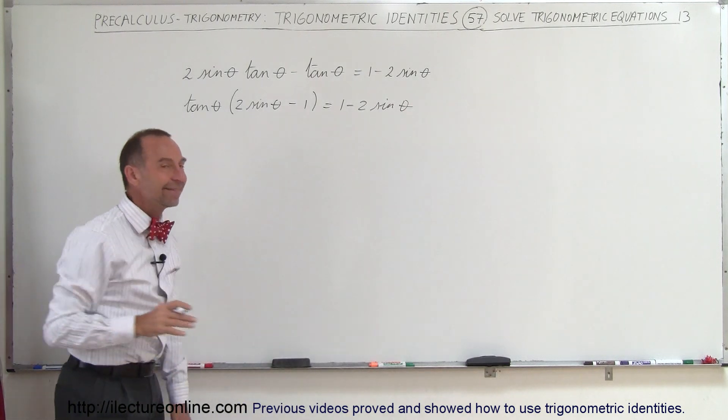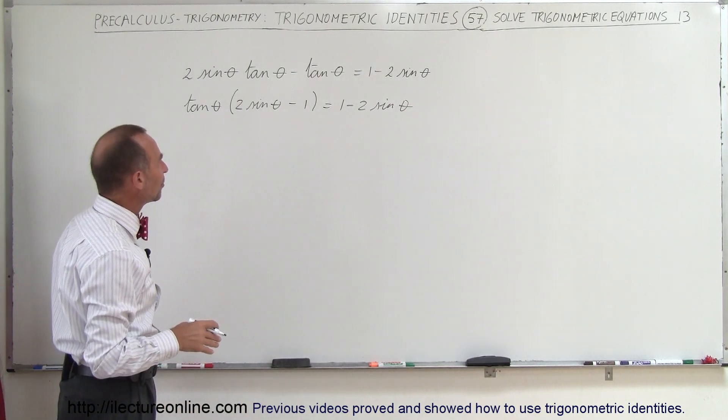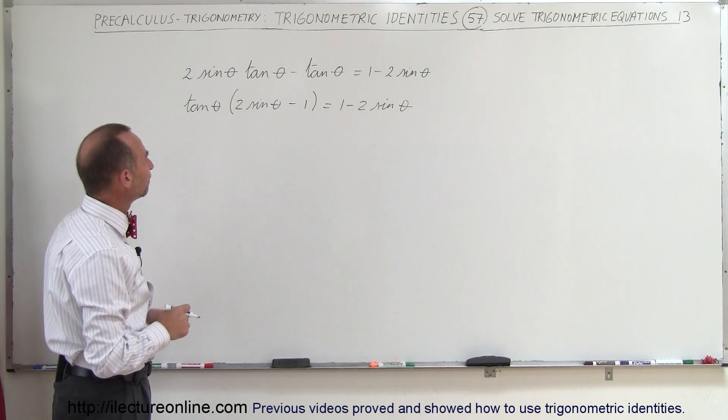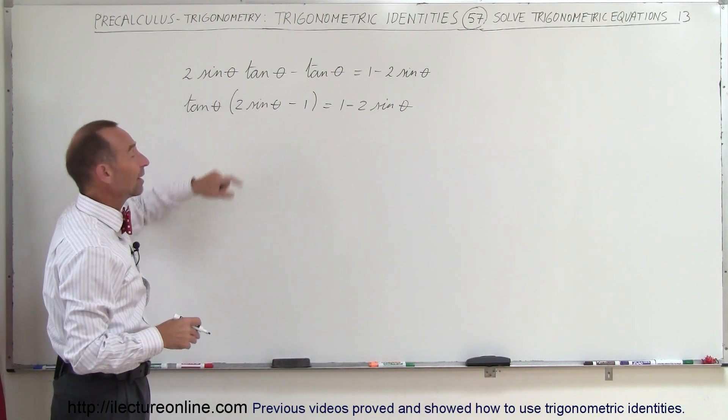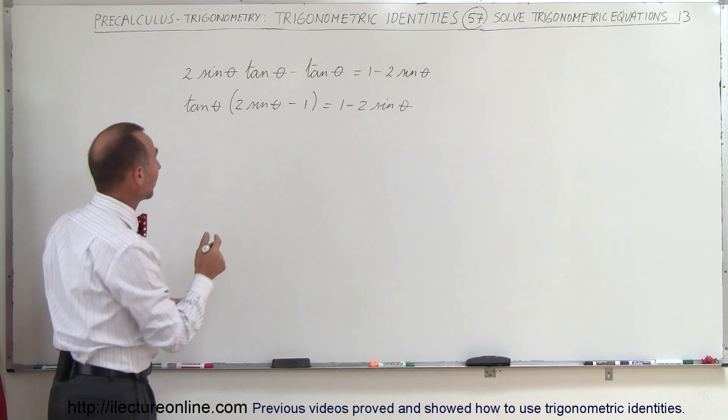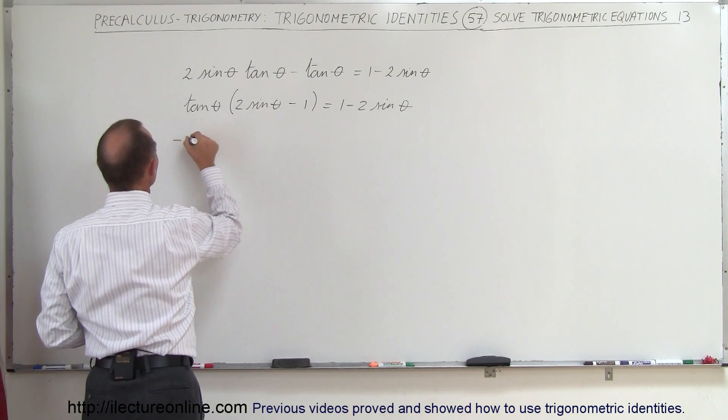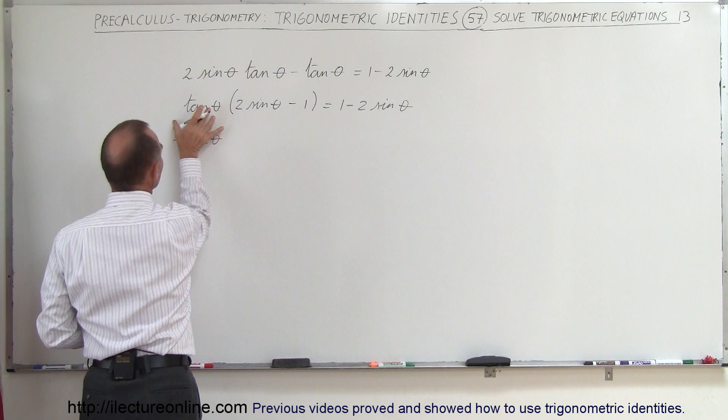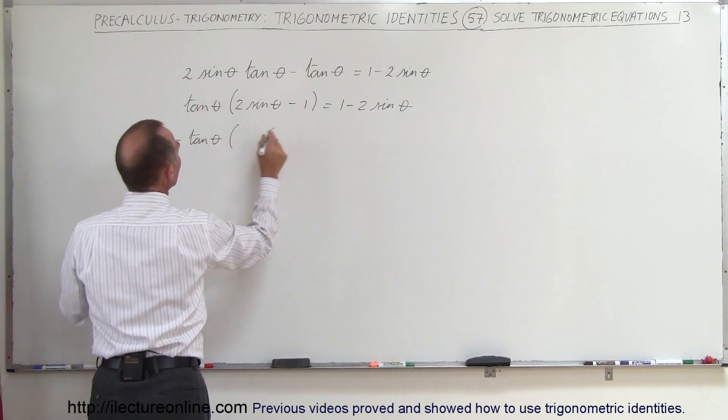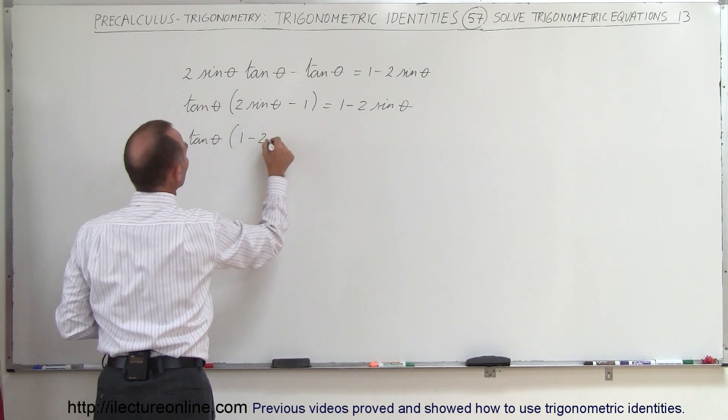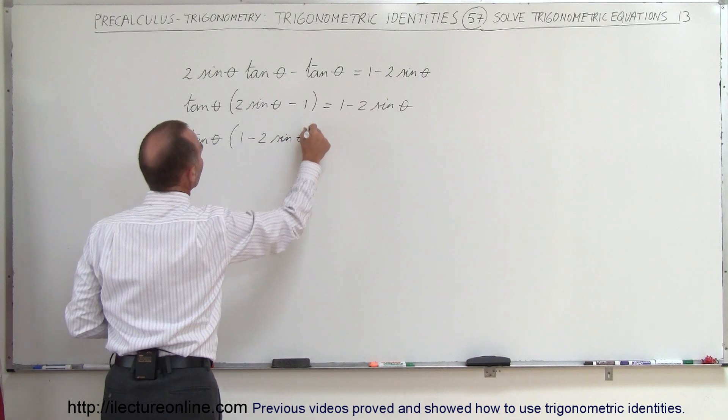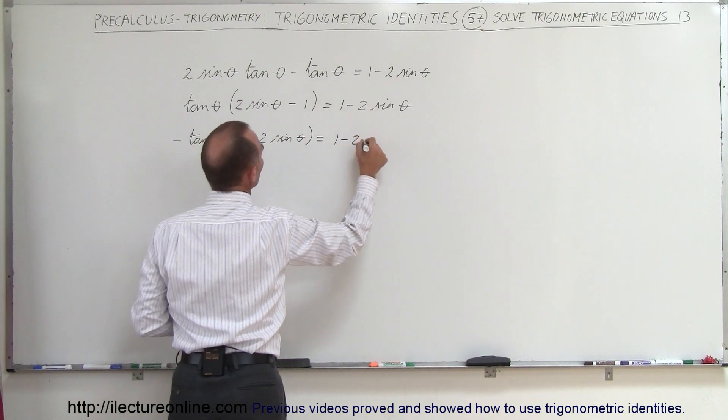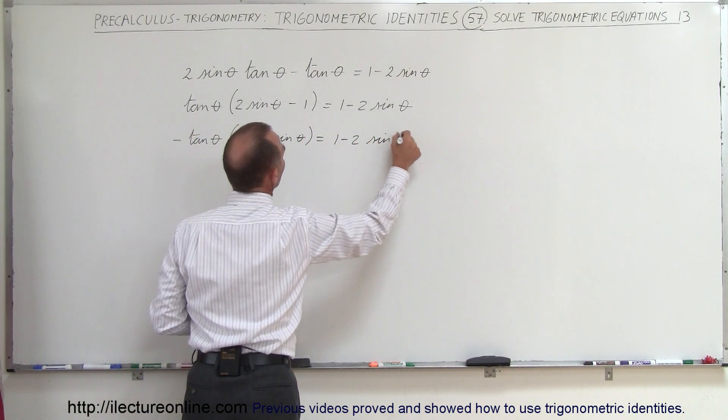Well, it's not exactly the same. You can see that if you multiply this by negative 1 and this by negative 1, you can move that around. I'm going to put a negative in front of the tangent of theta. Of course if I multiply this by negative 1, I have to do it by switching these around: 1 minus 2 times the sine of theta equals 1 minus 2 times the sine of theta.